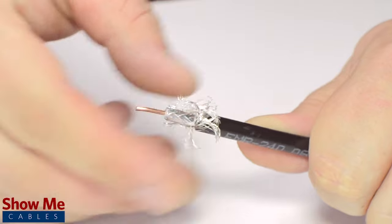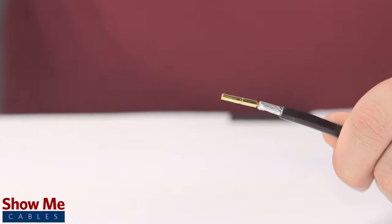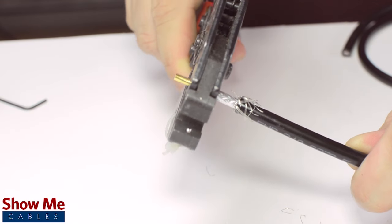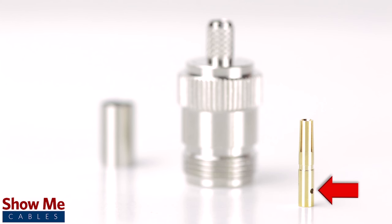Pull back the braided shield and insert the pin onto the center conductor. Crimp the female pin using the crimp tool. Many crimp pins will have a small well to allow for soldering. It is not necessary for installation, but it is recommended when possible for optimal signal strength.